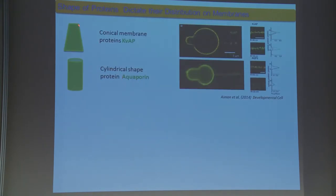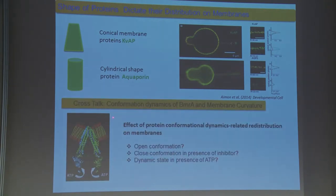We can calculate the protein enrichment from flat to curved surface. Our lab has shown that KBAP, which is conical, has a preference for curved surface, whereas aquaporin, which is cylindrical, doesn't have any preference for flat or curved surface. But what happens if the protein has both shapes and is going in a dynamic state? I'm going to take open conformation, closed conformation, and dynamic state. Let's see what happens.